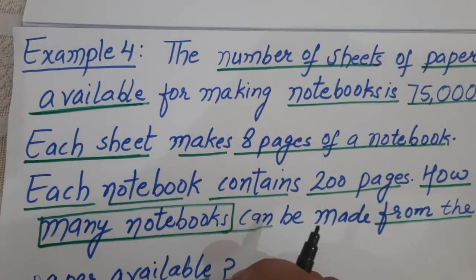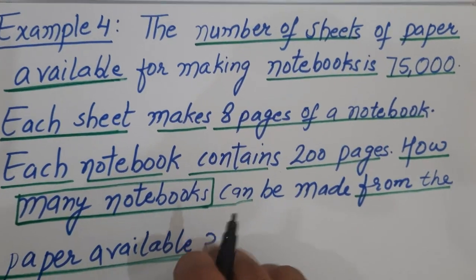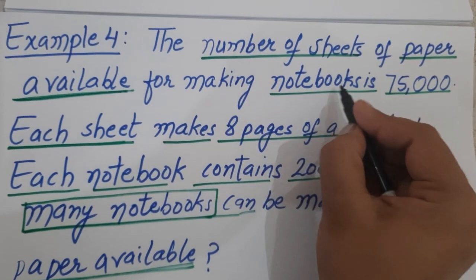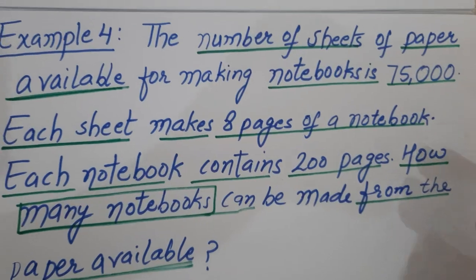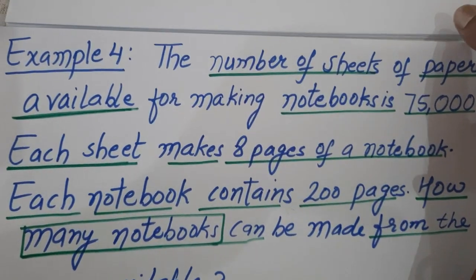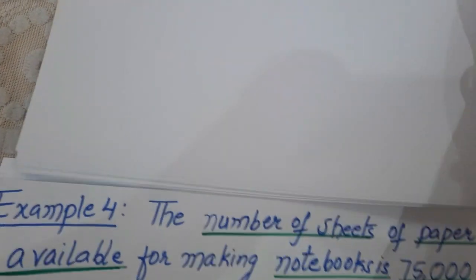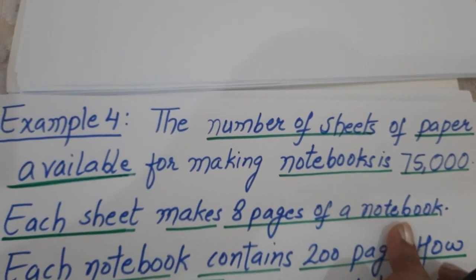Good afternoon students. Now we have example number four, which is on page number 16. In the example, the number of sheets of paper available for making notebooks is 75,000. Each sheet can make eight pages of a notebook.